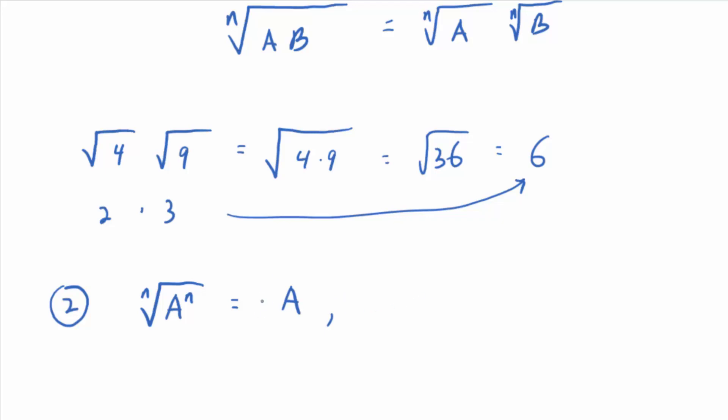Again, that's, you can lose the absolute value if n is odd, or if n happens to be even, then you can lose the absolute value if you assume a is bigger than or equal to zero. So those are the two big rules that are going to help us when multiplying and simplifying radicals today.